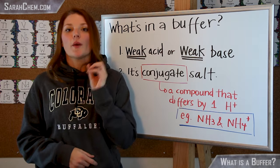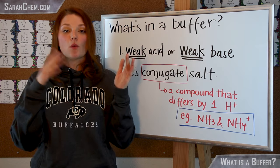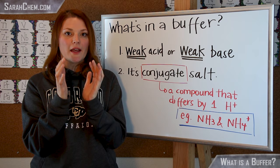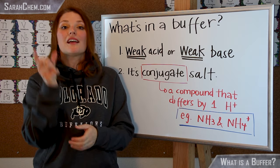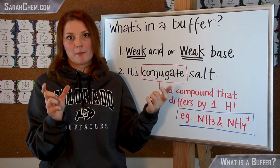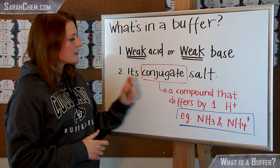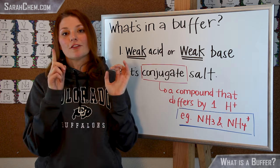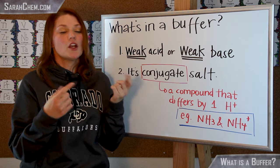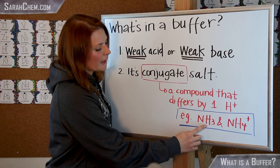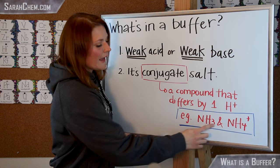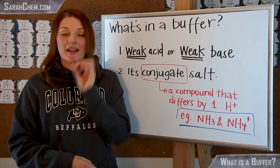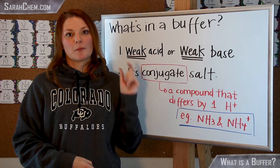The second thing you'd need is you have to have that weak acid or weak base conjugate salt — essentially some kind of salt that you put in the solution that contains the conjugate of that weak acid or weak base. Just to make sure everyone's on the same page: a conjugate is a compound that differs by one proton. For example, if we take a look at ammonia and ammonium, you can see that their formulas differ by one H+, and because of that, these two would be a conjugate pair.